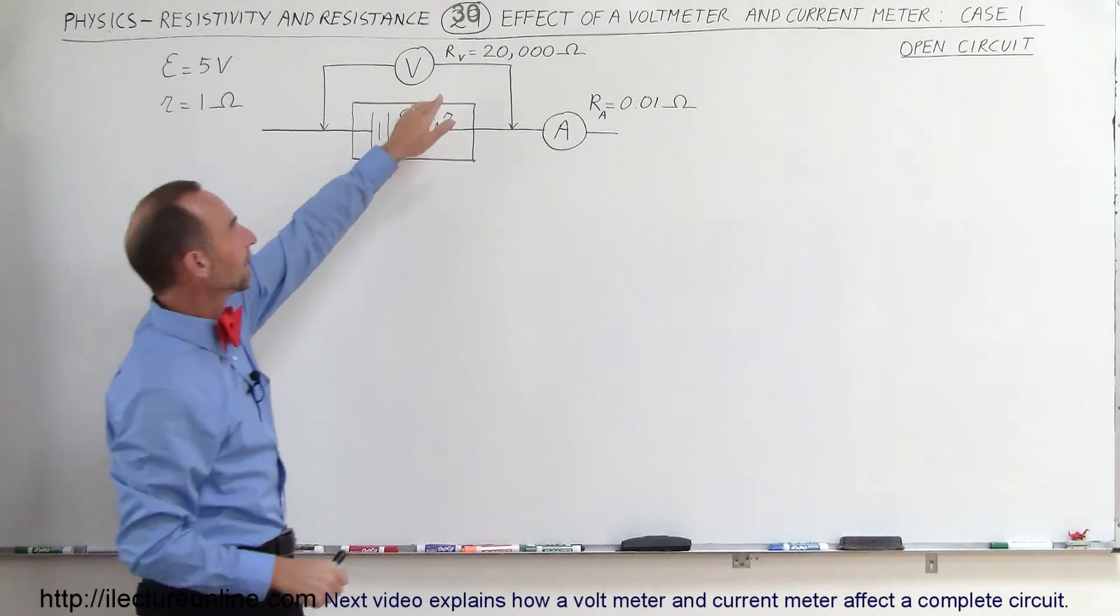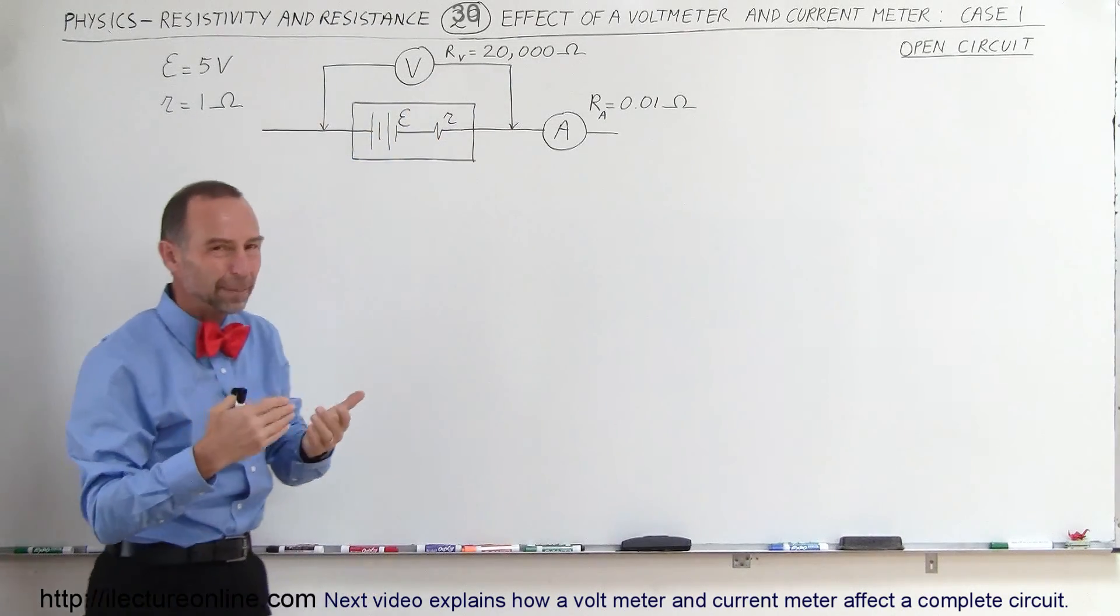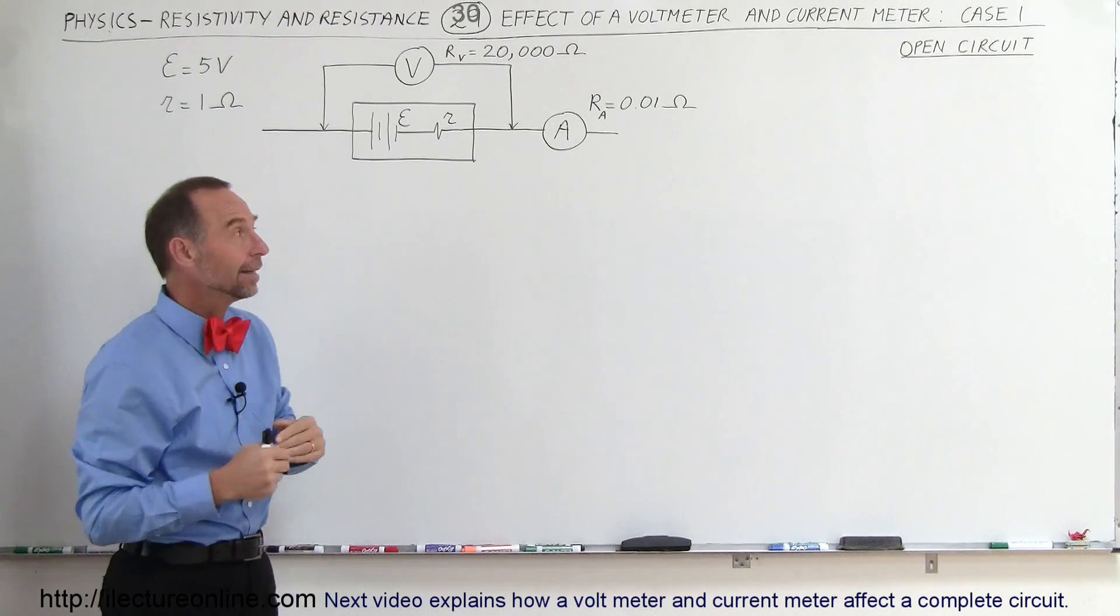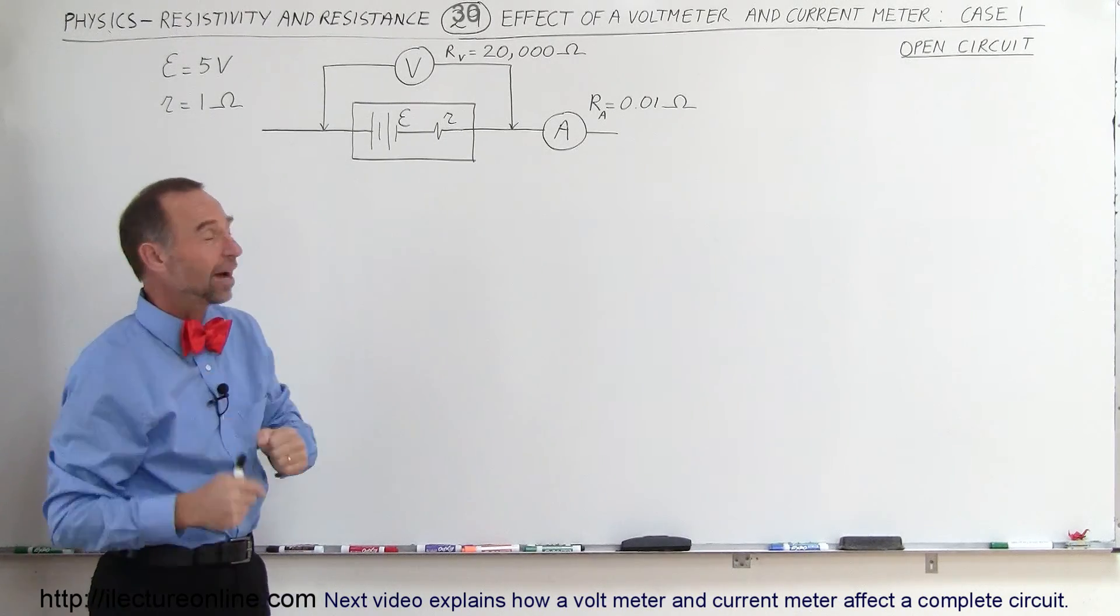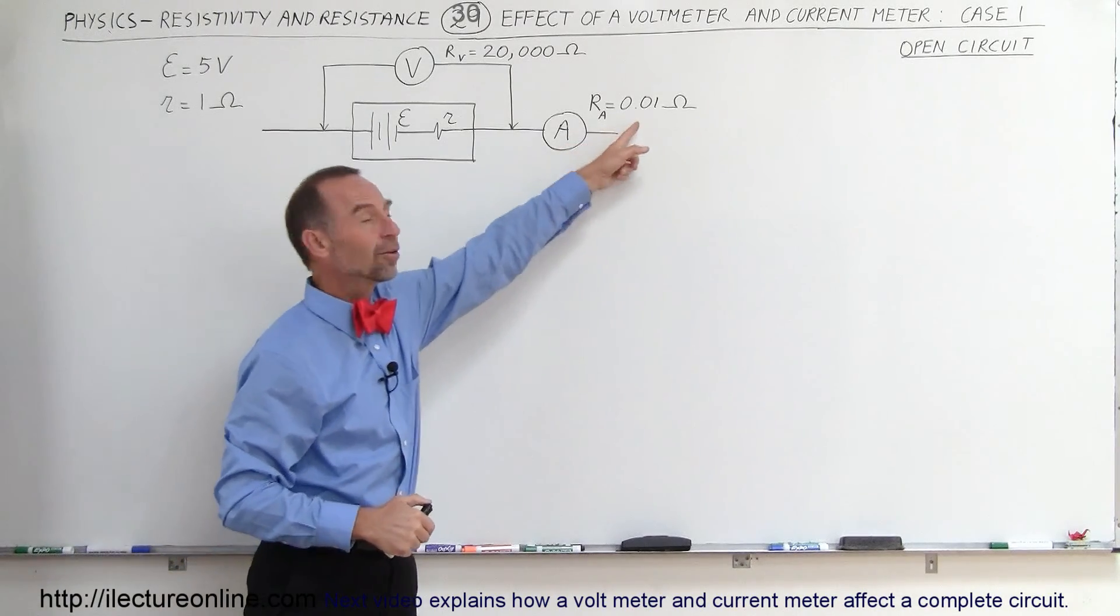We're going to assume that the internal resistance of the voltmeter is 20,000 ohms. Typically, internal resistances of voltmeters are fairly high. Modern voltmeters are probably much higher than 20,000 ohms. The internal resistance of current meters tend to be very low.